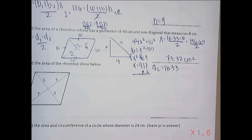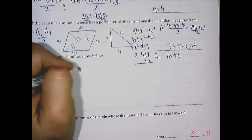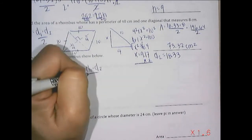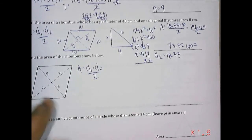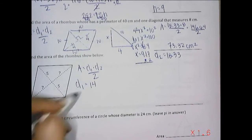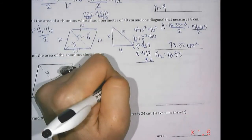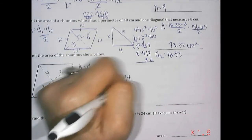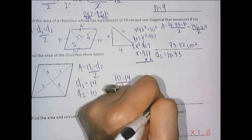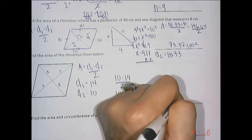Here's a simpler rhombus where diagonal 1 equals 14 and diagonal 2 equals 10. Area is 10 times 14 divided by 2 — that's 140 divided by 2 — equals 70 units squared.